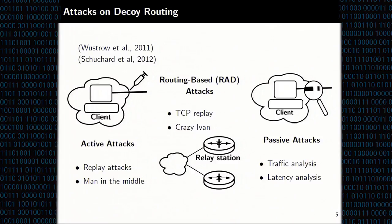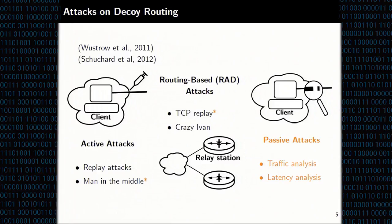Passive attacks exploit the difficulty of making a connection look like something it isn't. While the initial TLS connection is legitimate, in existing systems, after that point, traffic goes to the covert site and won't follow the patterns a censor expects from the overt site. This work is primarily about addressing these passive attacks, extending the legitimate connection all the way through to requesting real HTTP resources from the overt site. We've also addressed the man-in-the-middle attack, adding protections so the client doesn't leak that they're using a censorship-resistant system.